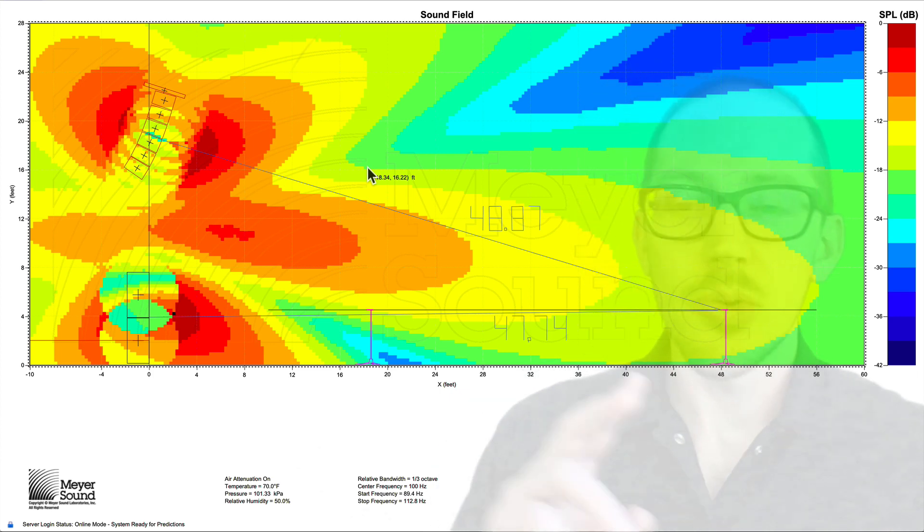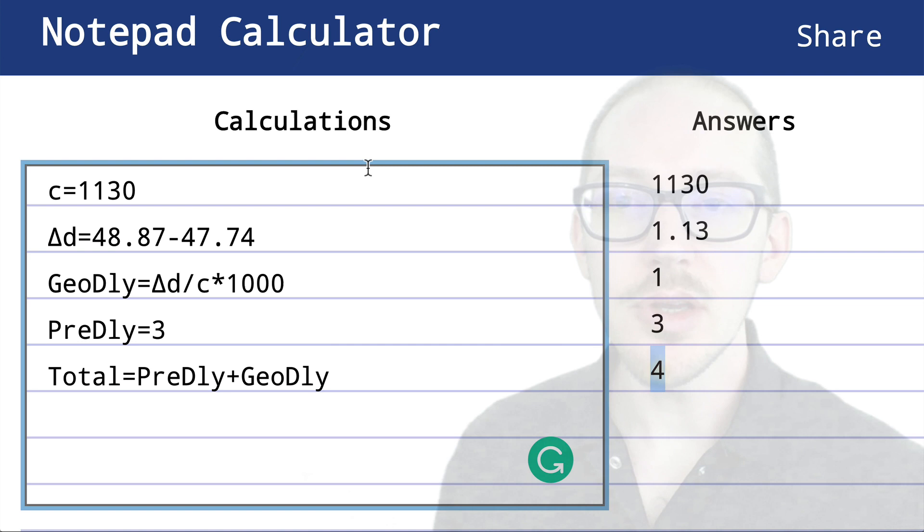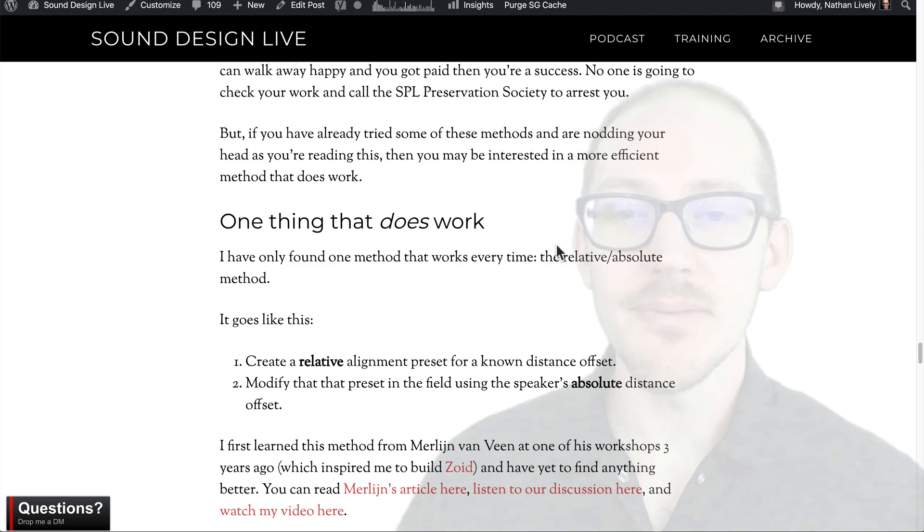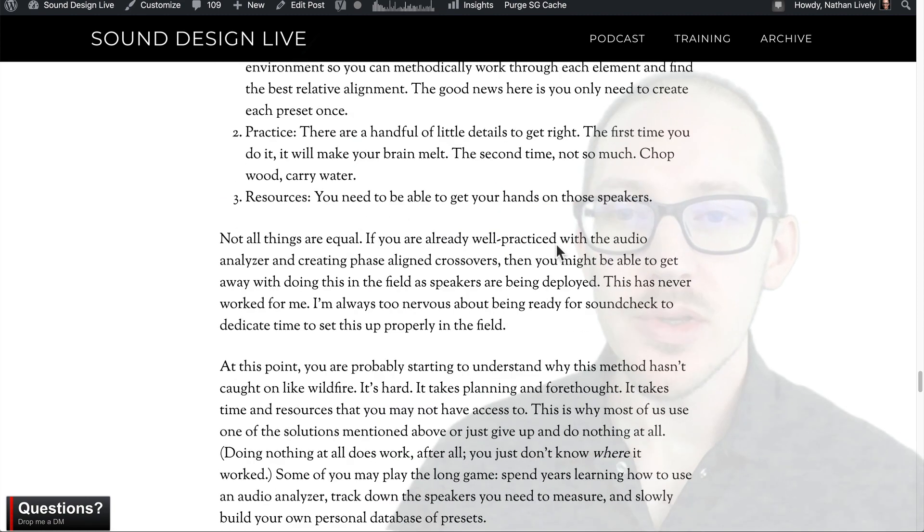So this is the entire method: creating a pre-alignment value and then modifying it in the field. So if this is so simple and it works every time, then why isn't everyone doing it? Well, I think it's for these three reasons.